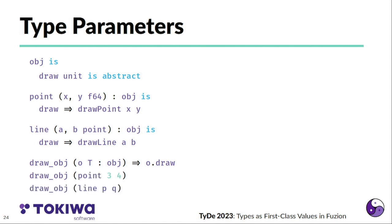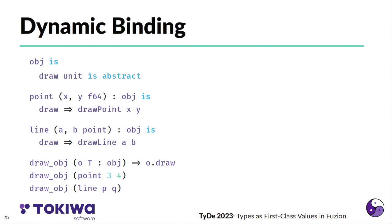Very similar to the previous example, we can now call draw object with either a point or a line, but what happens here at runtime is slightly different. In this case, the point or line gets not wrapped into some type, but we have monomorphization. That means we get different versions of draw object for points and lines that are used at runtime.